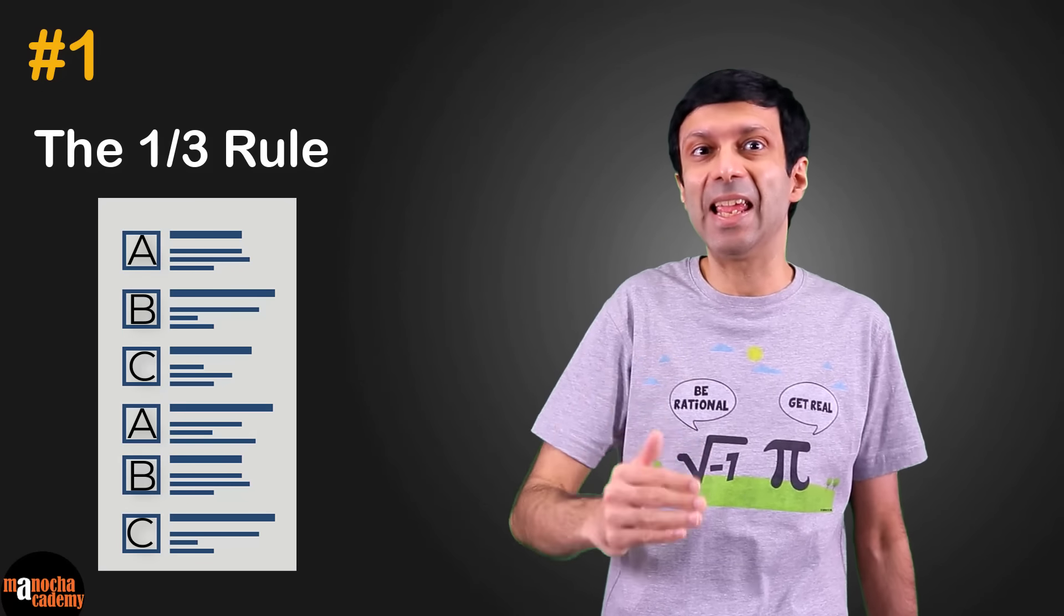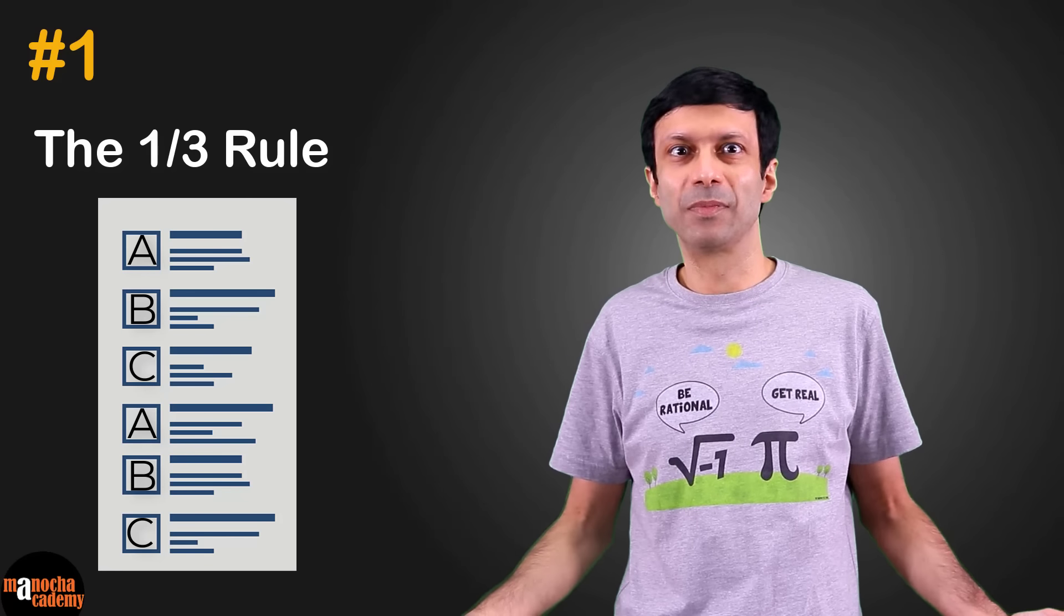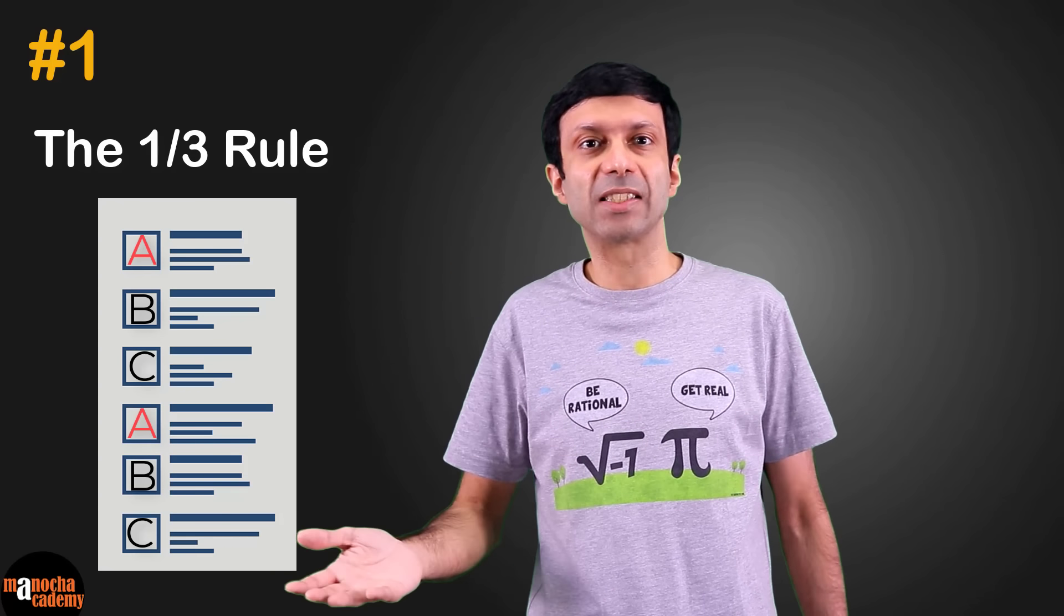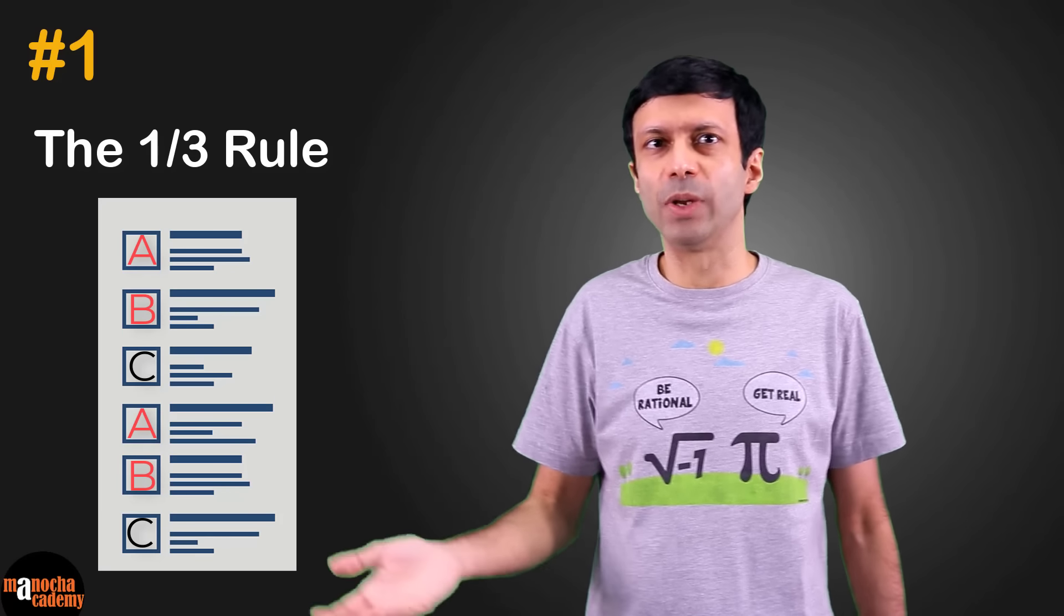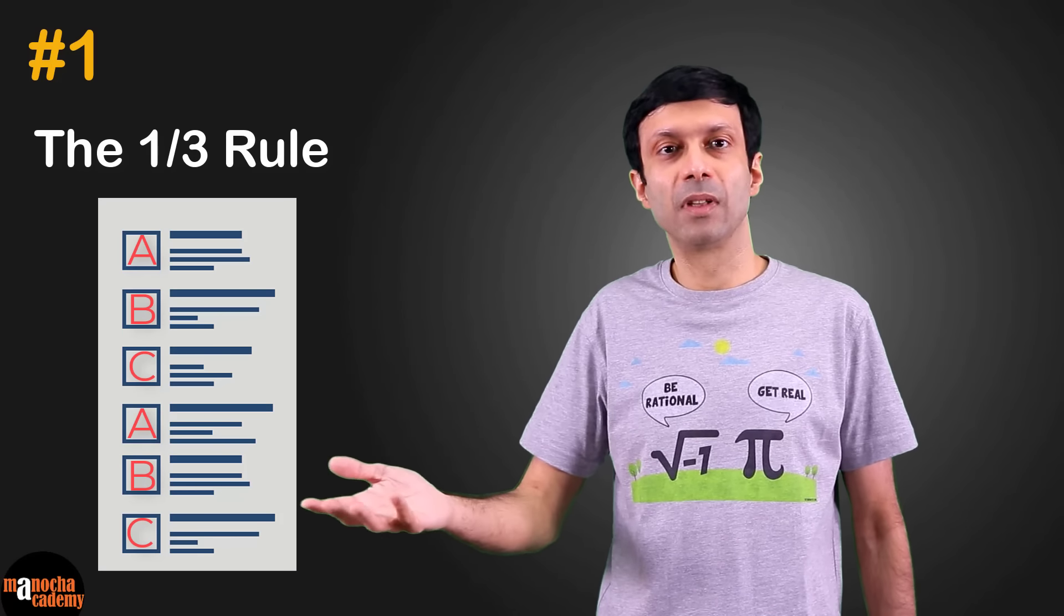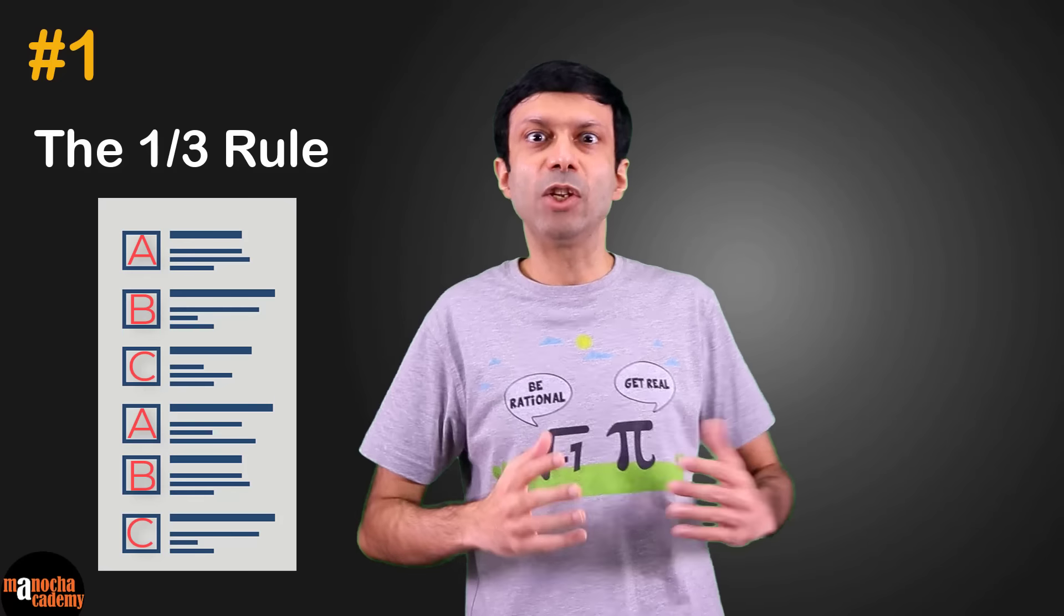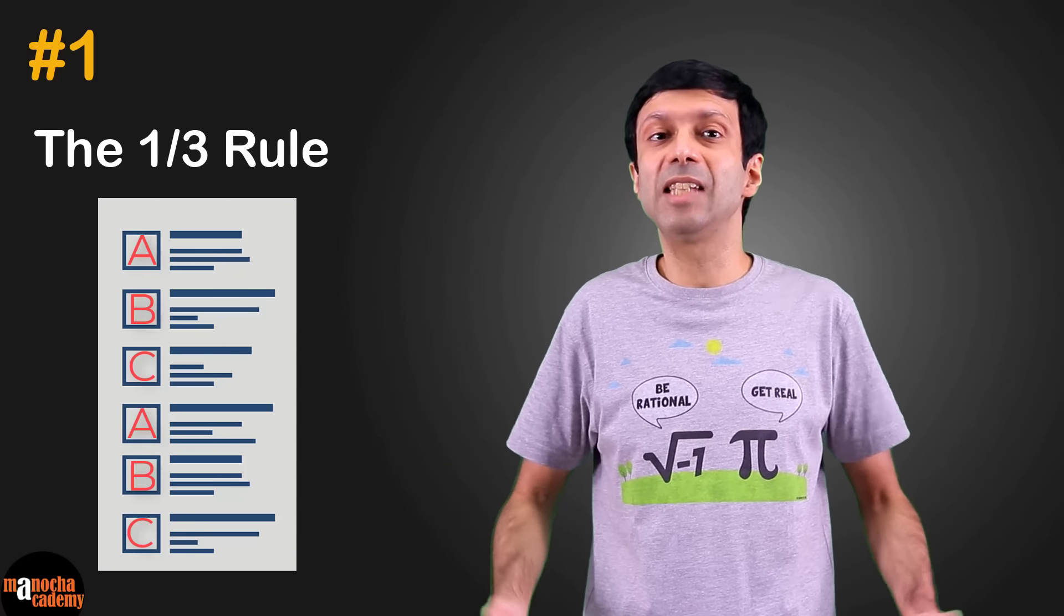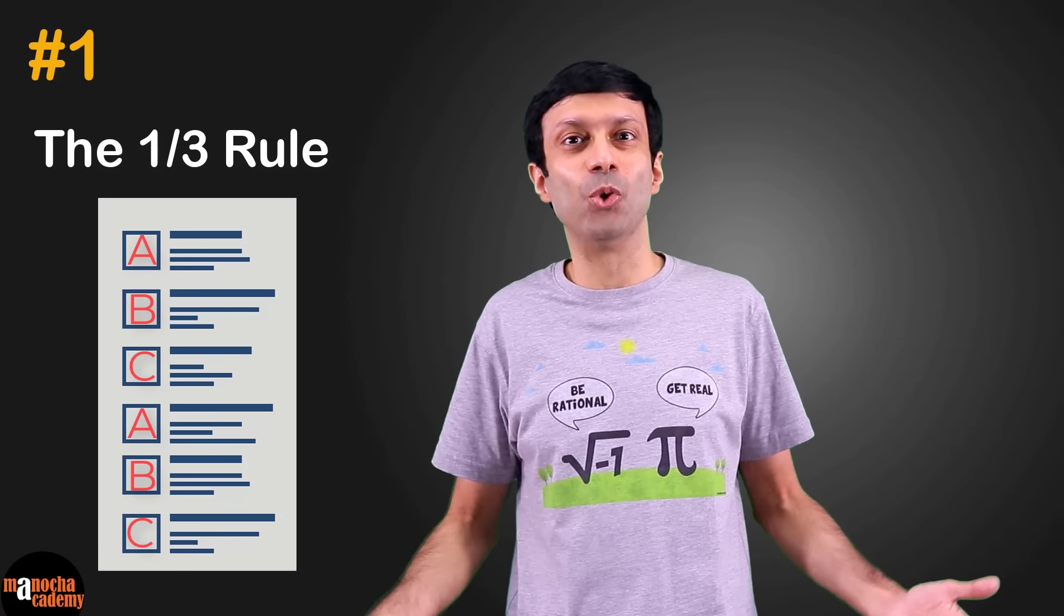A simple technique is to label all the sums in your exercise from the starting to the last sum as A, B, C, A, B, C and so on. So complete only set A which is one-third of the exercise on the first day. Do set B after a few days and the remaining set C in the next week. This will give your brain time to absorb the chapter. When you sit with the sums the next day you'll automatically see that they'll seem easier than the first day. So use the one-third rule and you'll see a big improvement in your math skills.